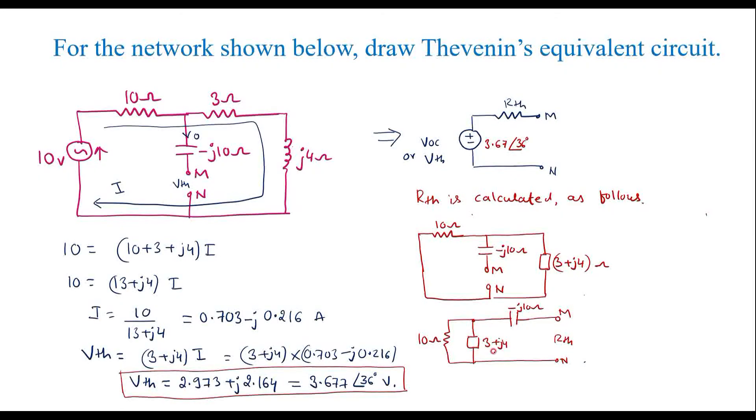Therefore, I can write RTH is equal to 10 parallel with 3 plus J4, and that whole combination is in series with minus J10. So simplifying this, RTH is equal to 10 into 3 plus J4 divided by 10 plus 3 plus J4, that is nothing but 13 plus J4, plus minus J10.